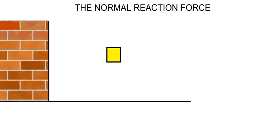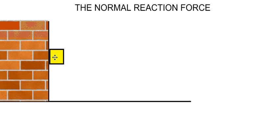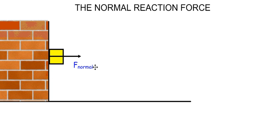Let us say now that our box was not resting on the ground, but was used to push a wall. So the push force is an action force against the wall, and according to Newton's third law, there must be an equal and opposite reaction. The action force of the push of the crate on the wall caused the wall to react with a force that pushes perpendicularly away from its surface, and that force we also call the normal reaction force.